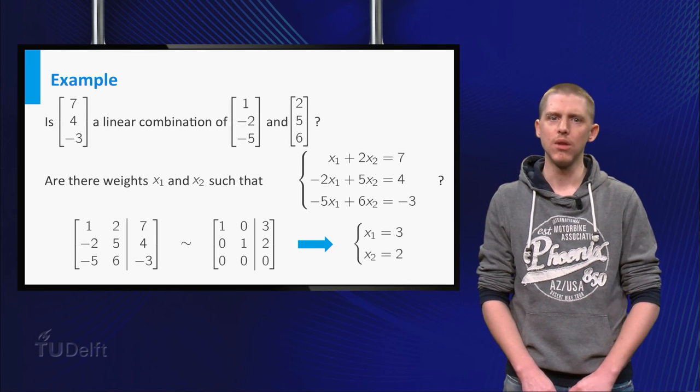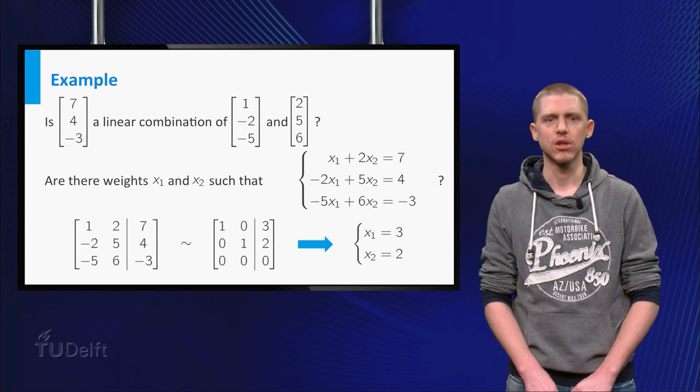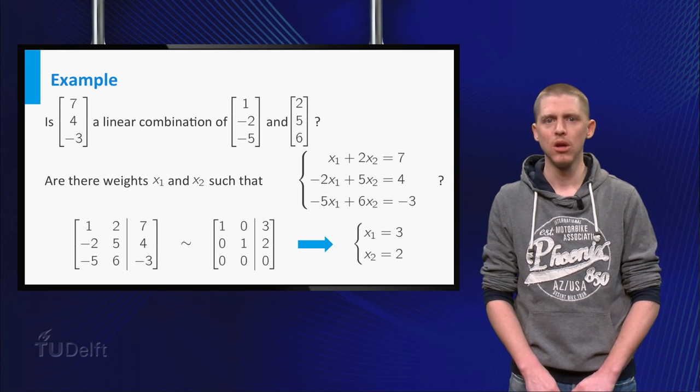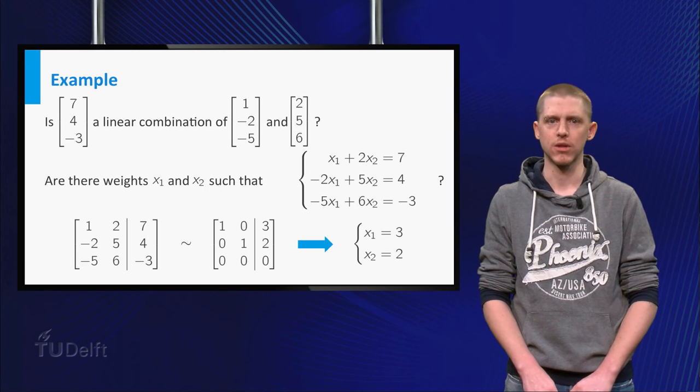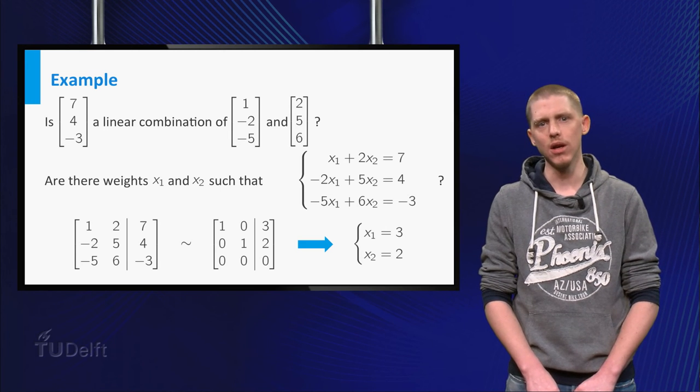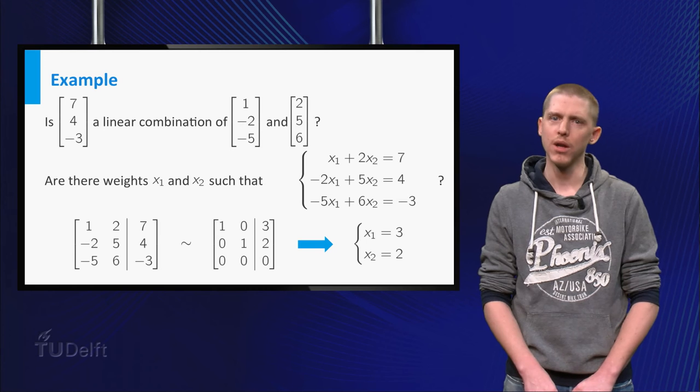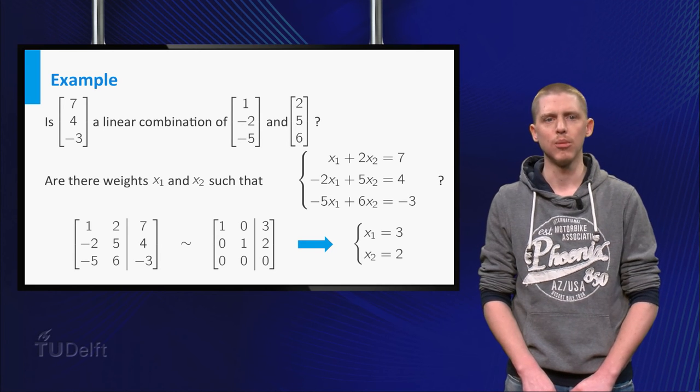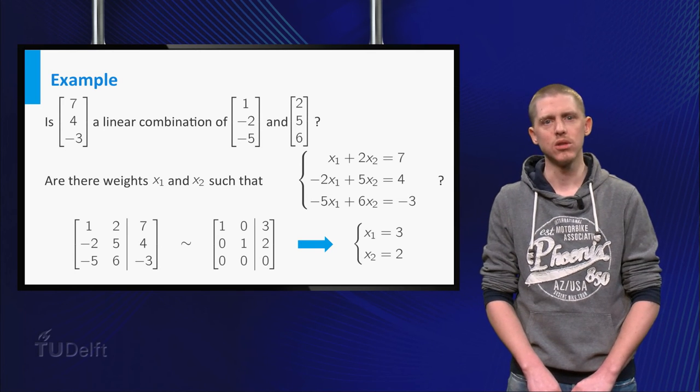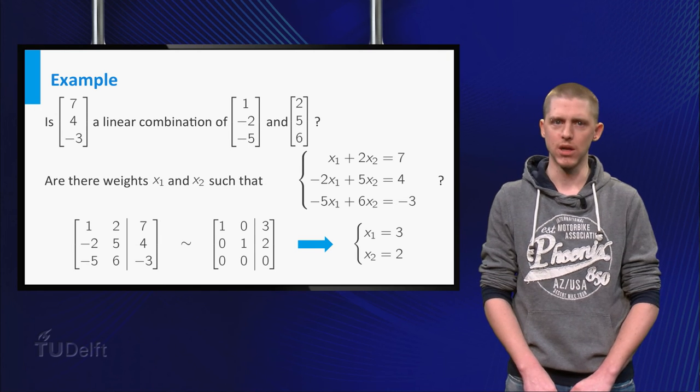So you now know that there are weights x1 and x2 such that x1 times the second vector plus x2 times the third vector equals the first vector. And this means directly that 7, 4, minus 3 is indeed a linear combination of 1, minus 2, minus 5 and 2, 5, 6.